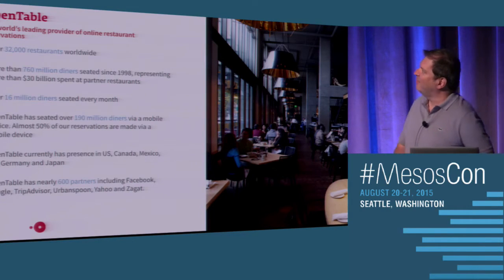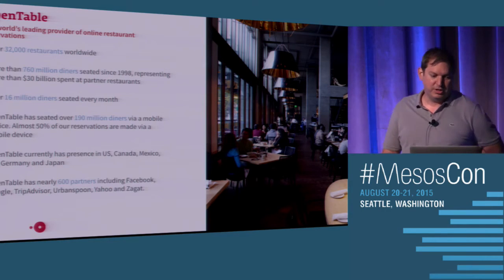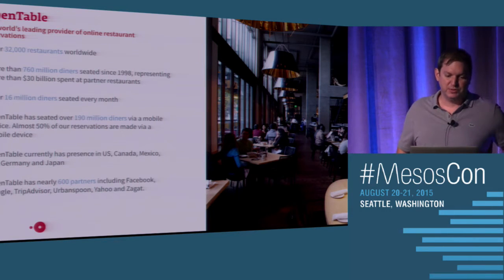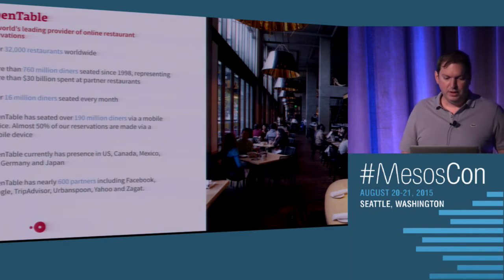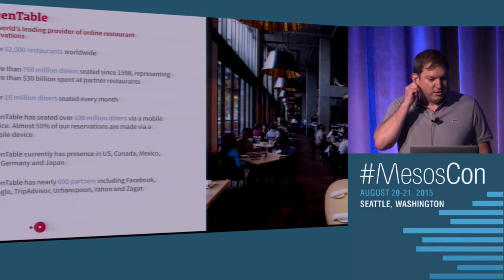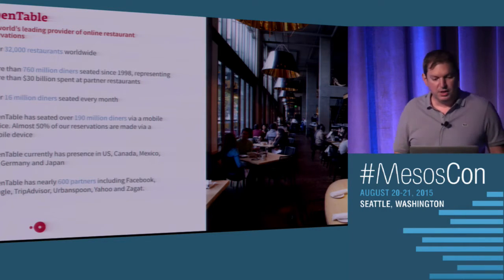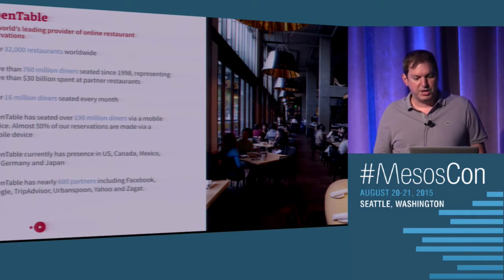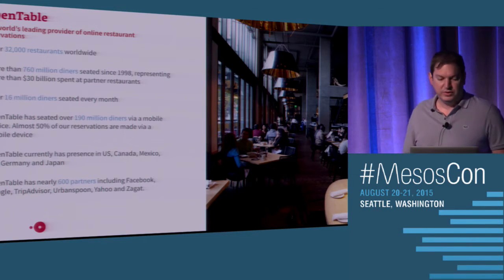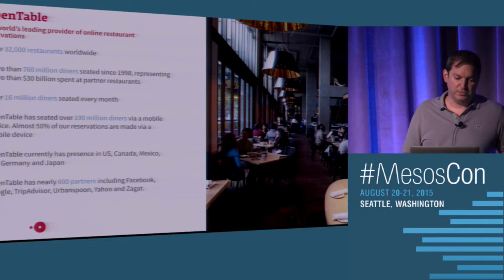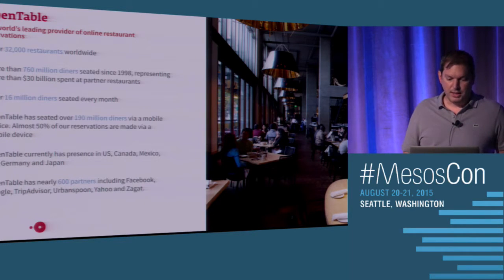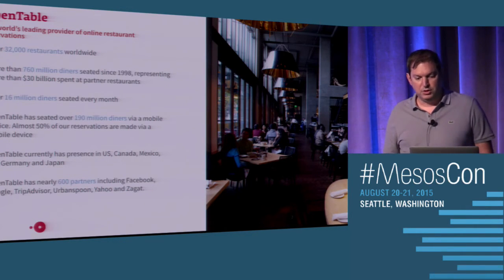This is OpenTable in numbers. We have 32,000 restaurants worldwide. We provide seating for 16 million diners every month. We have a presence in many countries: U.S., Canada, Mexico, Germany, U.K., and Japan. And we have activity with a lot of partners.